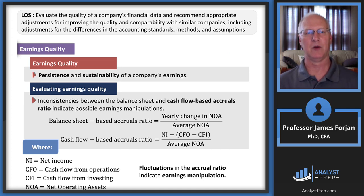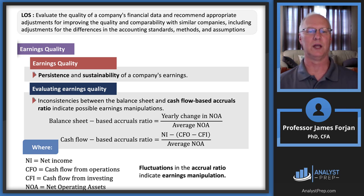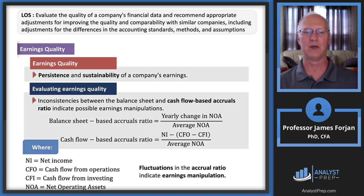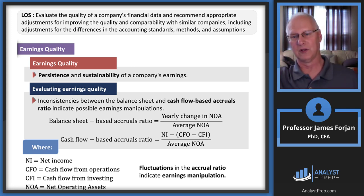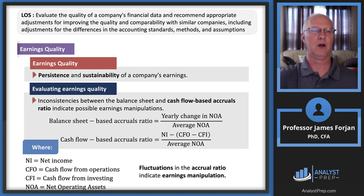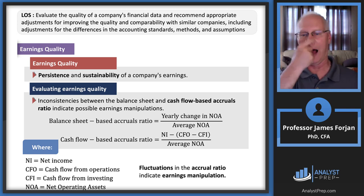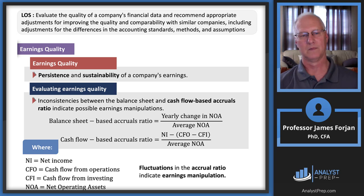Another LOS on earnings quality: sustainability and persistence. One way to assess this is with a couple of ratios. The balance sheet based accruals ratio is yearly changes in net operating assets over average net operating assets. The cash flow based accrual ratio is net income minus cash flow from operations minus cash flow from investing, over average net operating assets. If the trend looks stable, there's probably not much manipulation, but if the trend is erratic, you have to ask why.